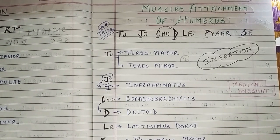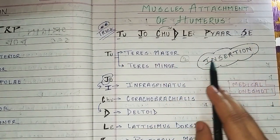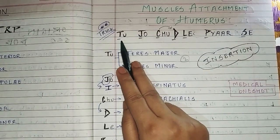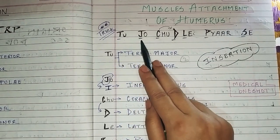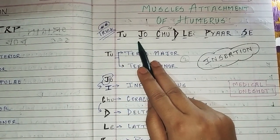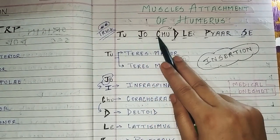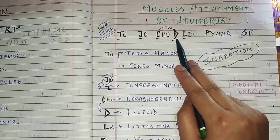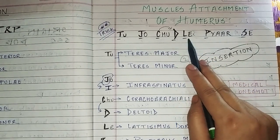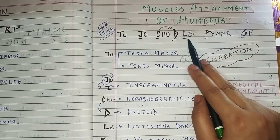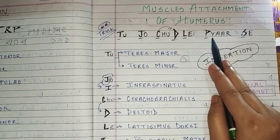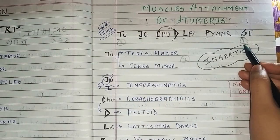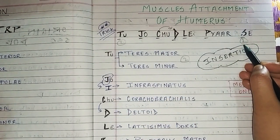Shall we repeat it together once more? This is for the insertion muscles. T — Teres Major and Teres Minor. Before J comes I — Infraspinatus muscle. C — Coracobrachialis. After C comes D — Deltoid. L — Latissimus Dorsi muscle. P — Pectoralis Major. S — Supraspinatus muscle and Subscapularis muscle. Again, two muscles each for T and S.